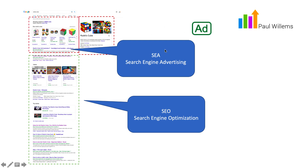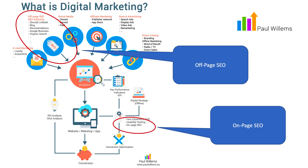When we look at the digital marketing model, search engine optimization is an online marketing channel to get more visitors to your website — just like social media, search engine advertising, and email marketing. Those are all channels to get more visitors to your website.